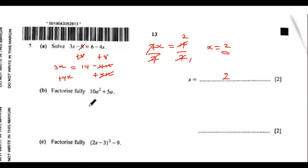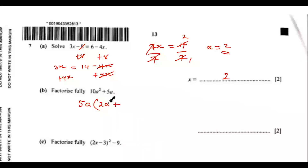Question 7b. Factorize fully: a squared plus 5a. Here you can factor out 5a, as 5a is common to the two terms. We are left with 2a, then plus 1. So the final answer will be 5a into bracket 2a plus 1.